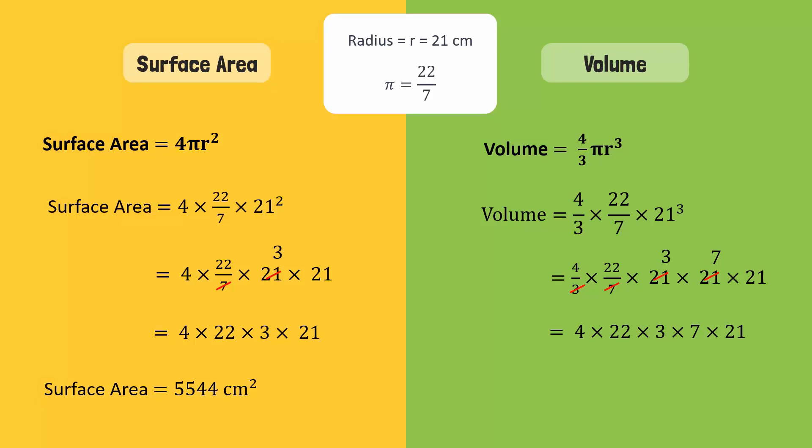We are left with 4 times 22 times 3 times 7 times 21, which is equal to 38,808 cubic centimetres. Hence, the amount of air inside this ball, or the amount of space it occupies, is 38,808 cubic centimetres. Notice the difference in the units for surface area and volume.